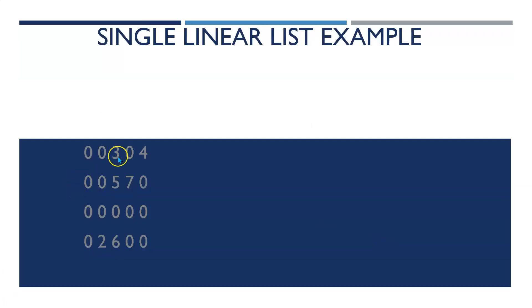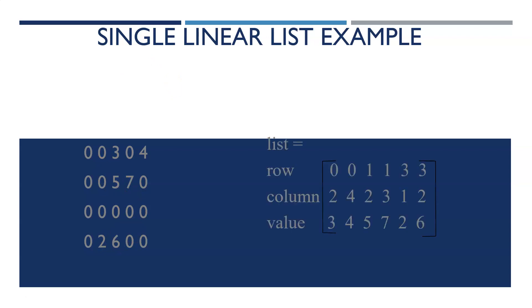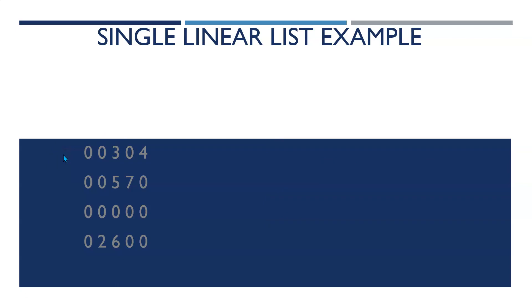For example, we have non-zero elements: 3, 4, 5, 7, 2, 6. This is a single linear list. The value 3 is at zero row, second column. The value at zero row, fourth column. So the matrix is represented as a C program — row, column, value.